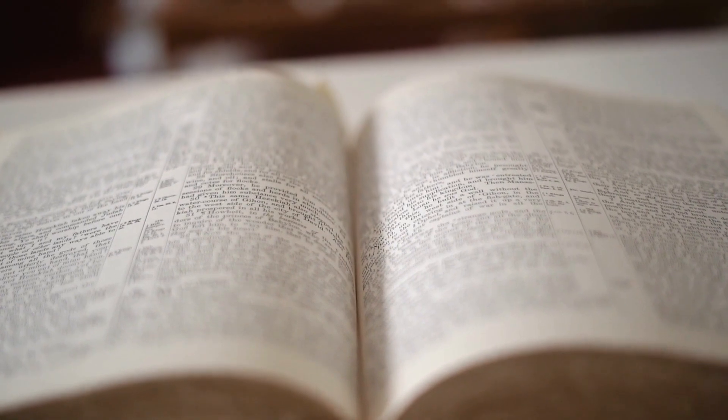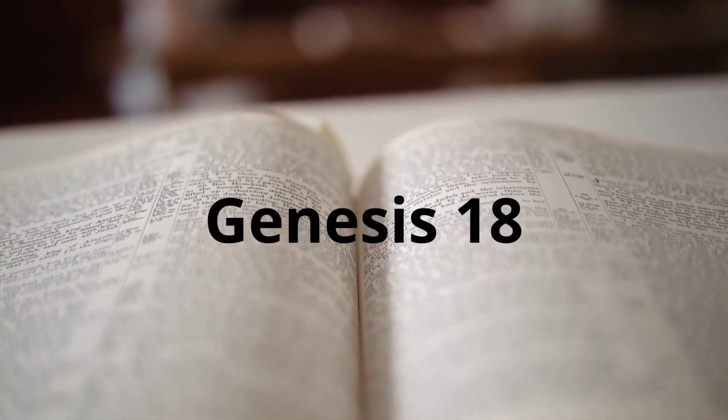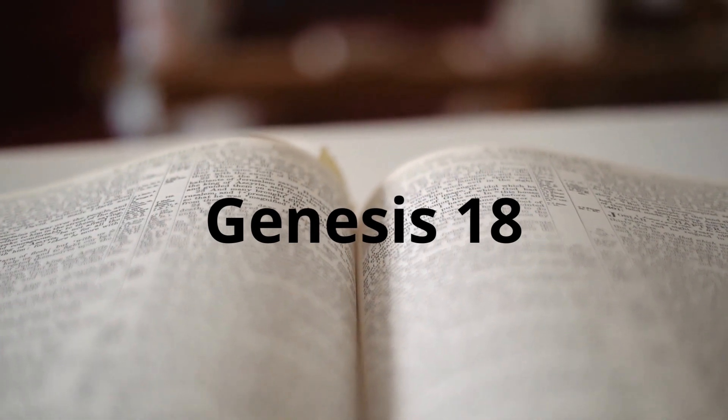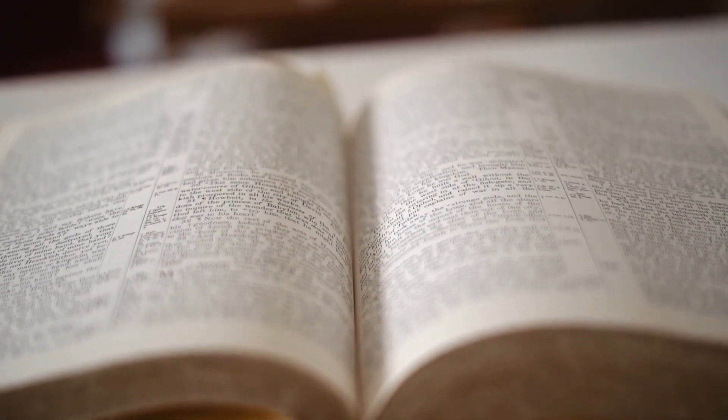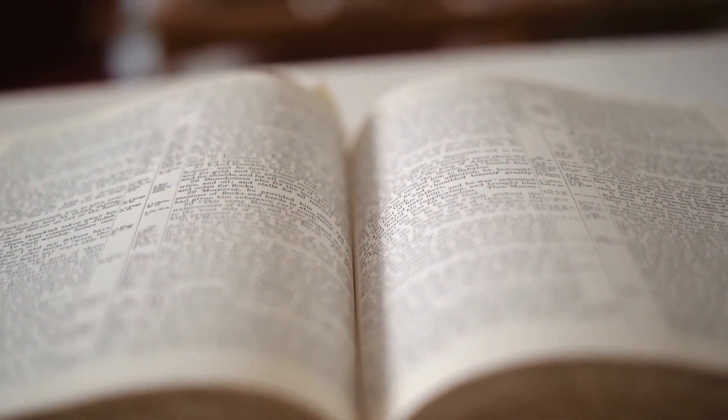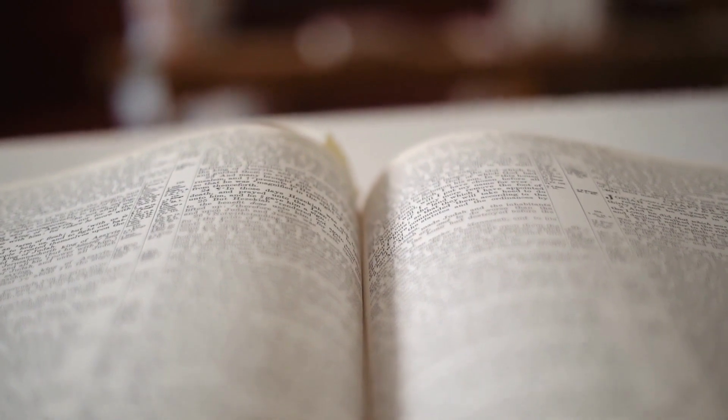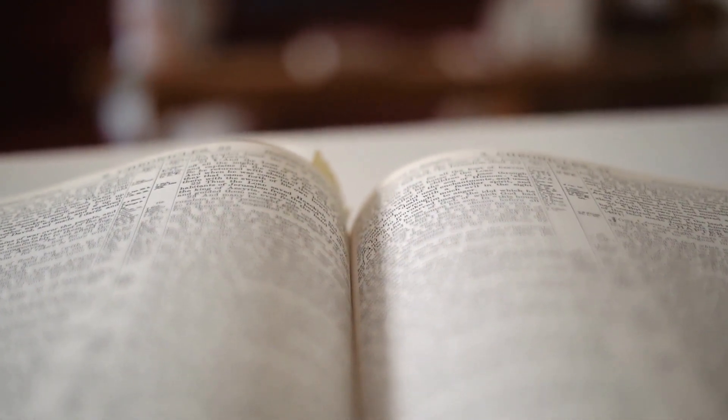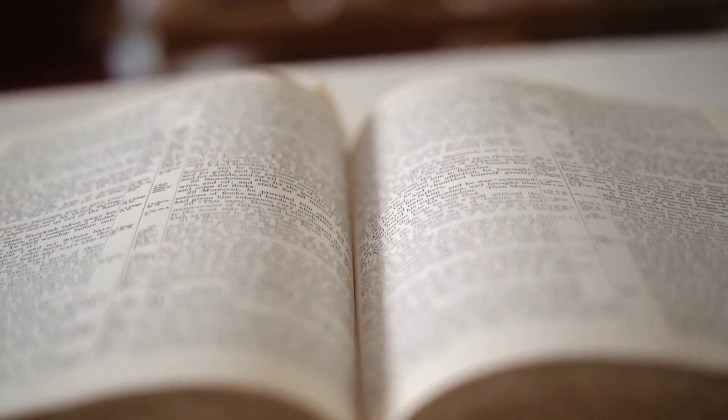Genesis 18. And the Lord appeared to him by the oaks of Mamre, as he sat at the door of his tent in the heat of the day. He lifted up his eyes and looked, and behold, three men were standing in front of him. When he saw them, he ran from the tent door to meet them, and bowed himself to the earth, and said,